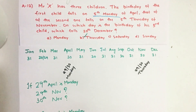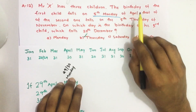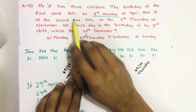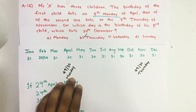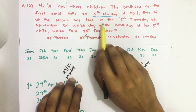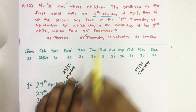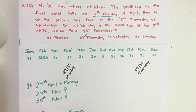Hello everyone. Here I am going to solve 2019 Seaside question number 12 from Question Vapor Series A. Mr. X has three children. The birthday of the first child falls on the 5th Monday of April. That of the second one falls on the 5th Thursday of November. On which day is the birthday of his third child which falls on 20th December?